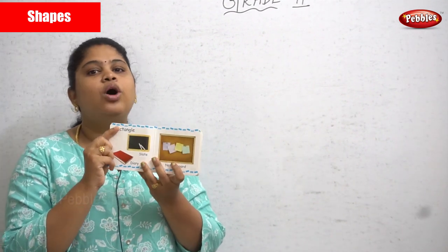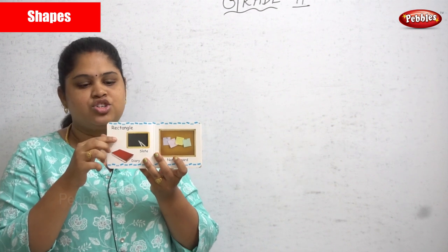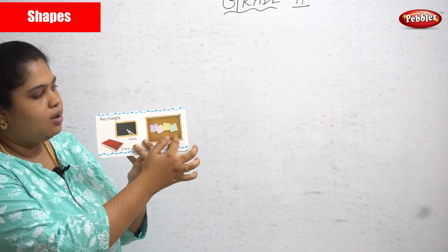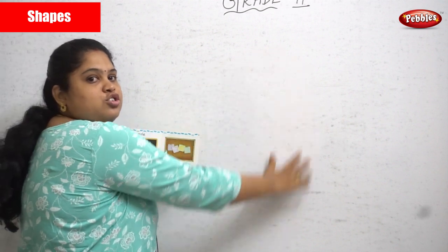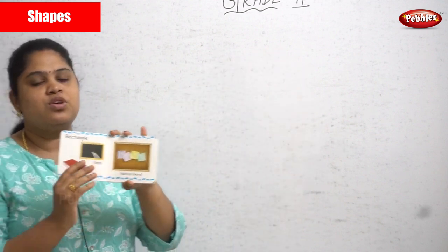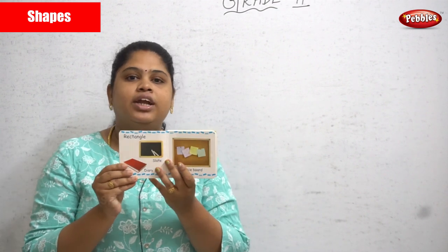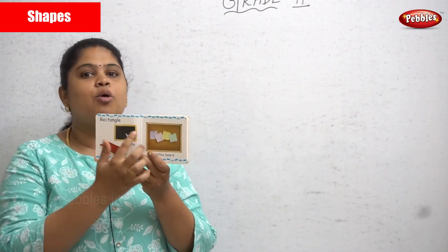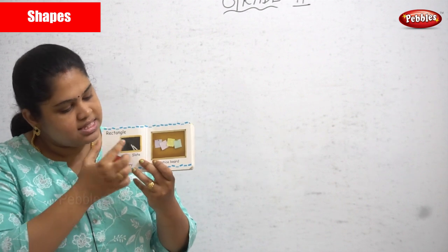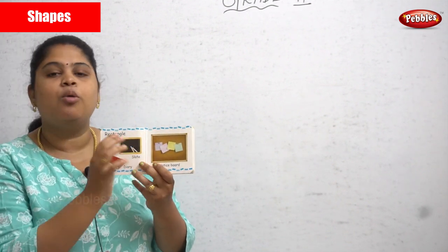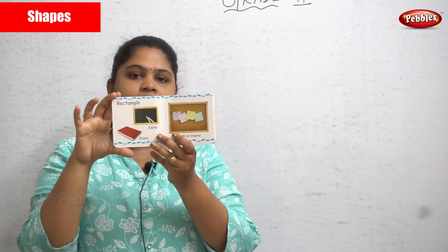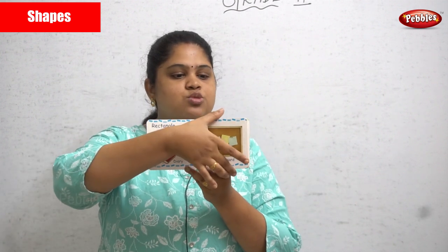Next is a rectangular shape. Examples of rectangular shapes are a slate, a diary, and a board — the whiteboard also looks like a rectangle. In a rectangle, the opposite sides are equal.